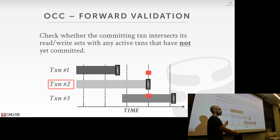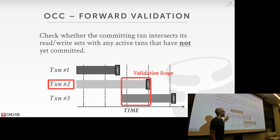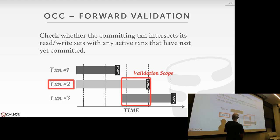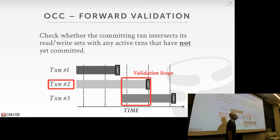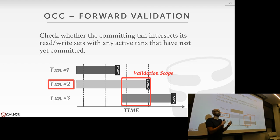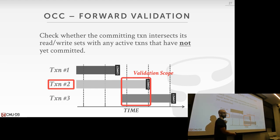In forward validation: when T2 is ready to commit, you find all concurrently running transactions that have not committed yet and validate against those — in this case T3. It could be that T2 made an update in its local private space that T3 should have read, but T3 read a stale database value instead. If so, T2 must abort itself. An important constraint: all transactions must perform validation in the same direction — you can't mix forward and backward validation.